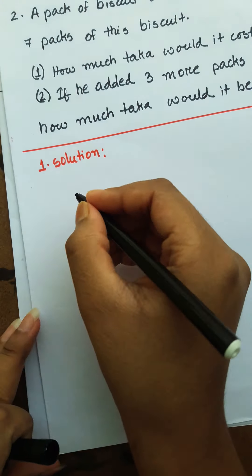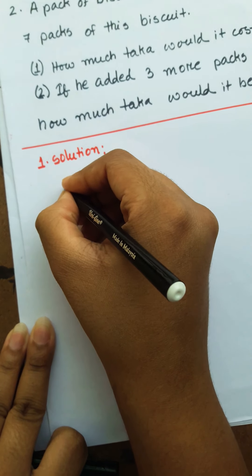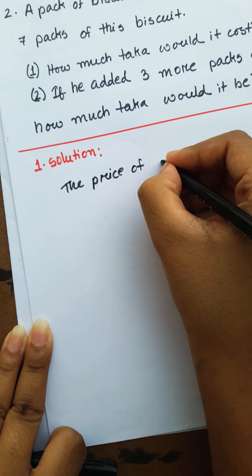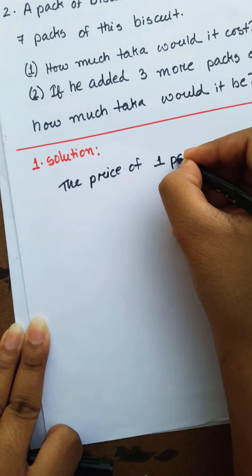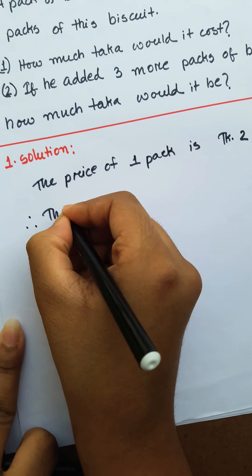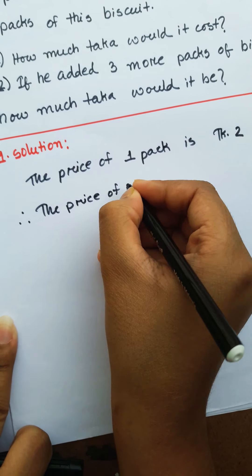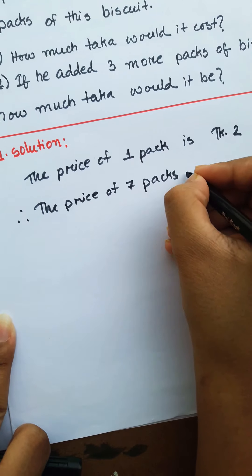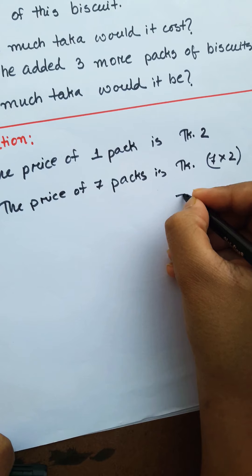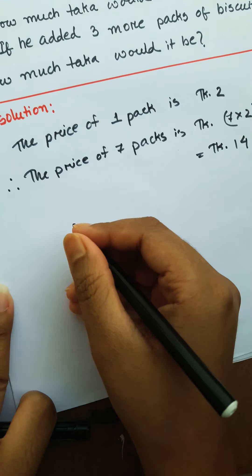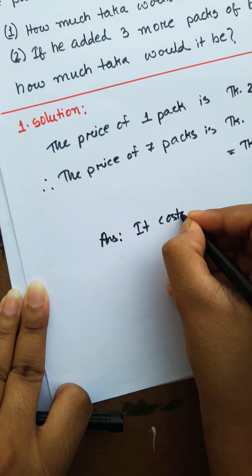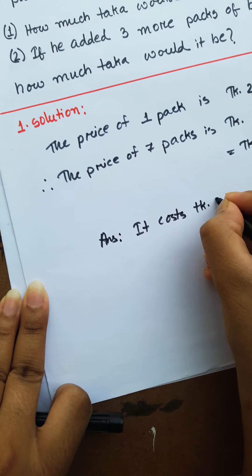The price of 1 pack is taka 2. The price of 7 packs is taka 7 into 2, which is equal to taka 14. So the answer is taka 14.